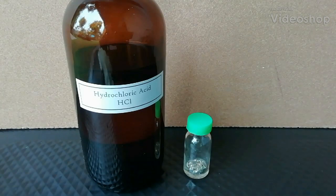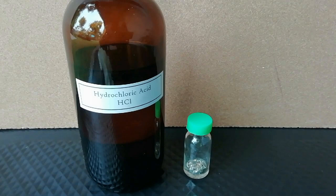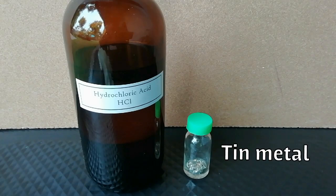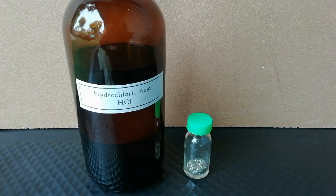This video shows how to make stannous chloride, also known as tin chloride. For this experiment, concentrated hydrochloric acid and tin metal were used.